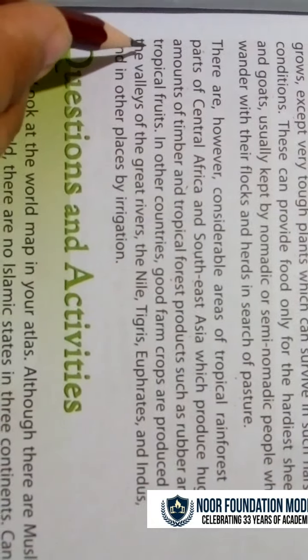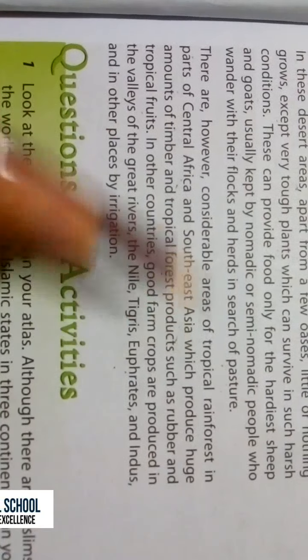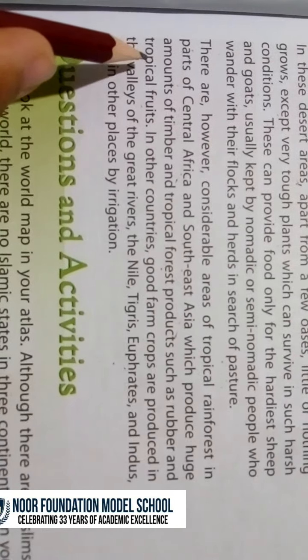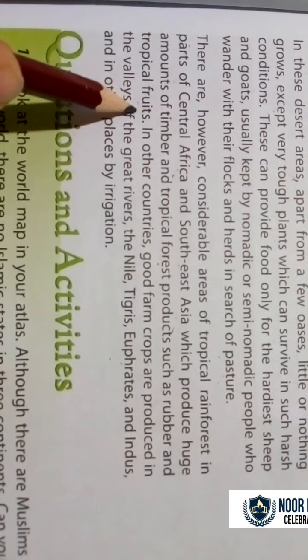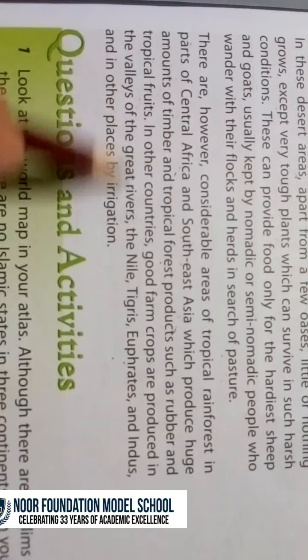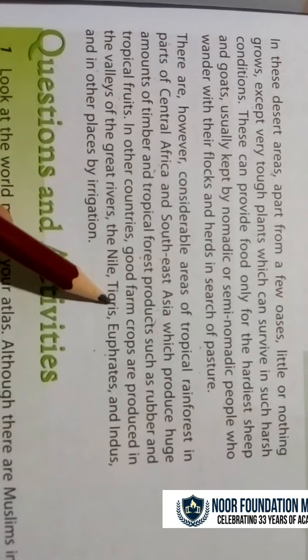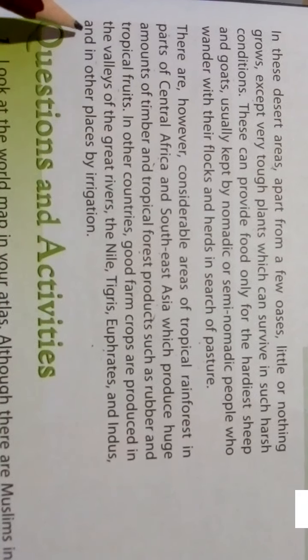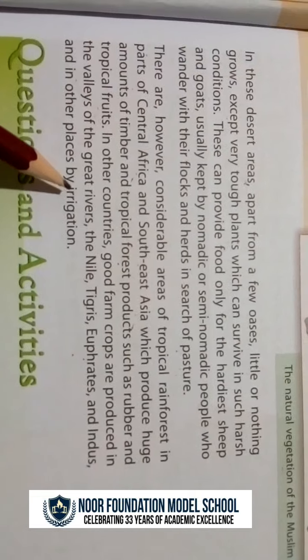The great rivers include the Tigris, Euphrates, and the Indus, and other places use irrigation. In Central Africa and Southeast Asia there are tropical forests which produce rubber and fruits. In other countries there are rivers such as the Nile, Tigris, and Euphrates, where irrigation produces farmland.